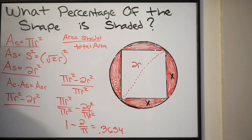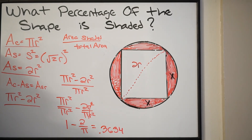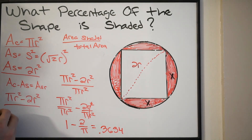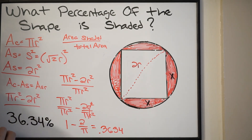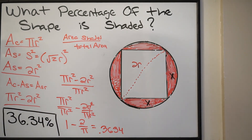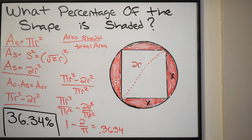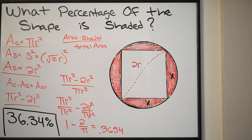Rounding and multiplying by 100 to convert to a percent, our final answer is 36.34%. That is the percent of the shape that is going to be shaded.